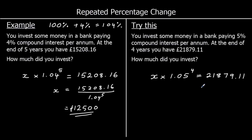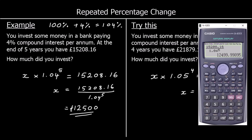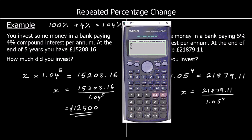So what is our original amount of money? We need to divide both sides by 1.05 to the power of 4. We're going to type that into the calculator using the fraction button: £21,879.11 divided by 1.05 to the power of 4. And that gives us £17,999.997.